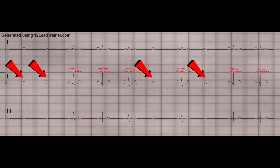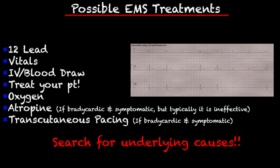Let's jump into some of the possible EMS treatments. Make sure you follow your protocol and stay within your scope of practice. You can get a 12-lead — that's what will confirm a second degree type 2. Obtain vitals, get an IV, and obtain a blood draw if that's something your service does. Treat your patient based on their complaint and presentation: are they extremely bradycardic, symptomatic, conscious, or unconscious? You can administer oxygen. Atropine is an option if the patient is bradycardic and symptomatic, but typically with a heart block it is ineffective. Transcutaneous pacing is the go-to if the patient is bradycardic and symptomatic — these patients are often heading to the hospital to have a pacemaker placed, so transcutaneous pacing may be what EMS has to administer in the meantime.